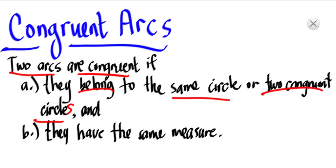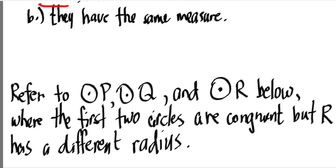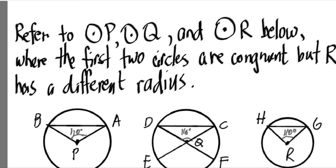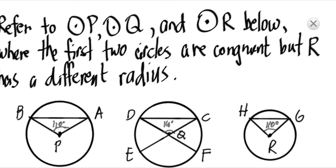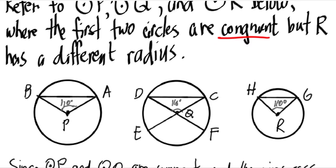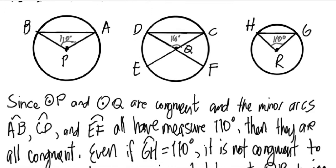Take a look at the circles down below. We have circle P, circle Q, and circle R. The first two circles are congruent — they are exactly the same — but circle R has a different radius. Two circles are congruent when their radii are equal, and circle R's radius differs from circle P and circle Q.